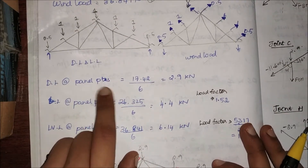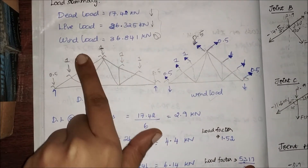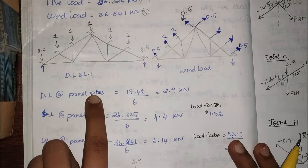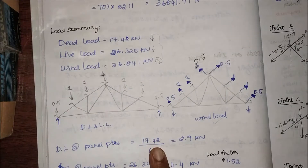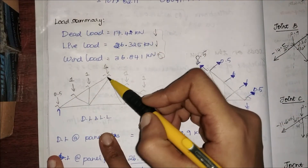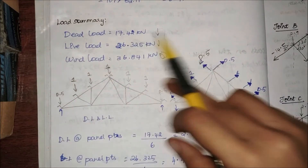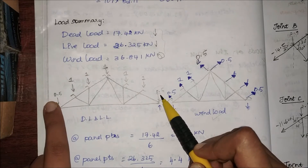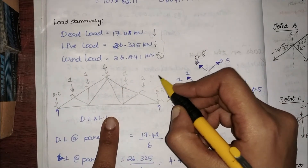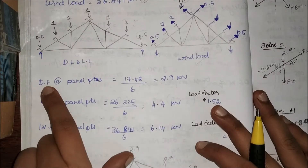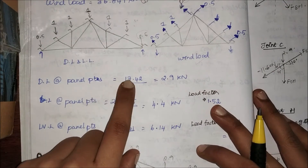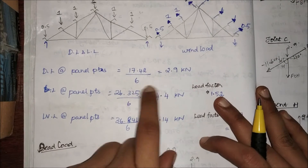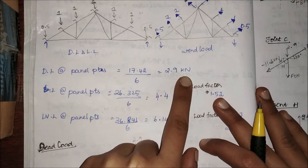Coming to dead load at panel points, I have to find what is my dead load at one panel point. When I look at my panel points, it is one, two, three, four, five. When I add them all it becomes 1+2+3+4+5 and 0.5+0.5 giving me five plus one, which is equal to six. So my dead load at panel points becomes 17.42 — that is my summarized load — divided by six, which gives me 2.9 kilo newton.